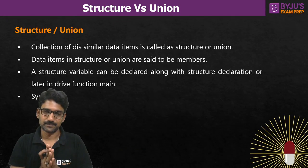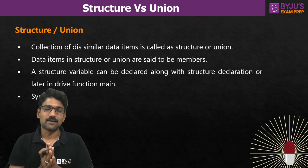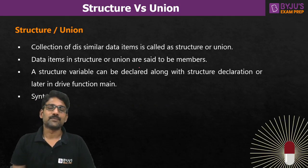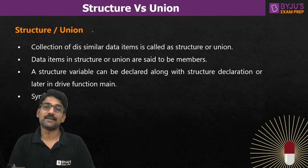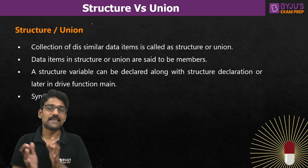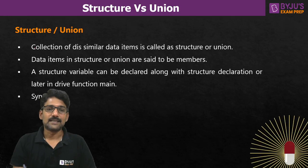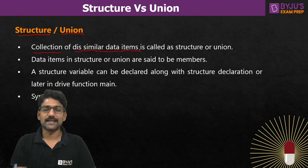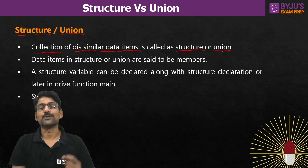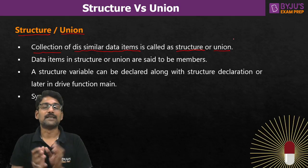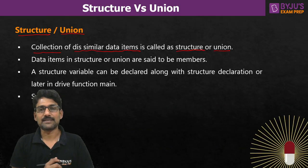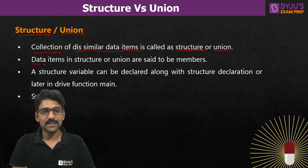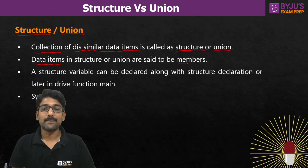Let's start with structure and union. What is the definition? We know that an array means a collection of similar data. But what if we want to group dissimilar data? For that, we have structure or union. So a collection of dissimilar data items is called a structure or union. When we want to group different data items, the option we have in C language is either structure or union. The data items in this group are called members of the group.